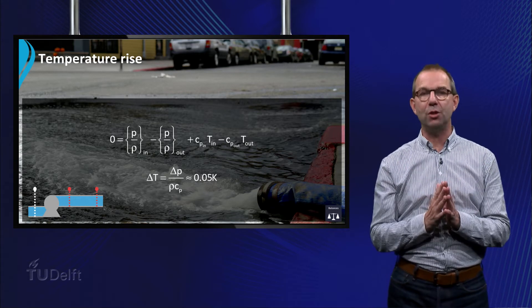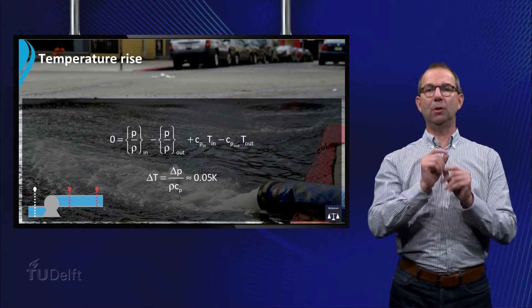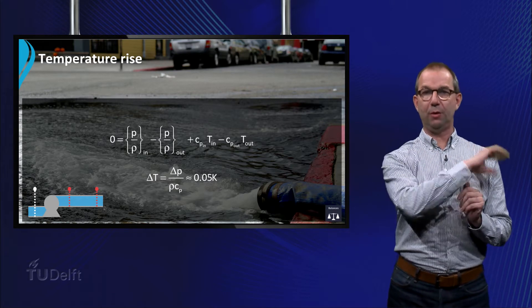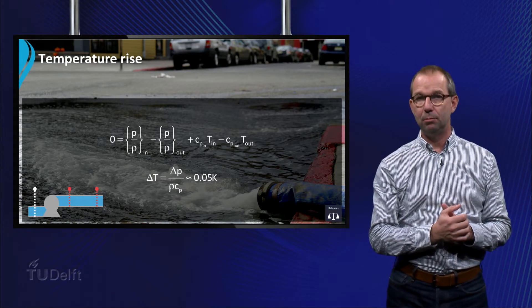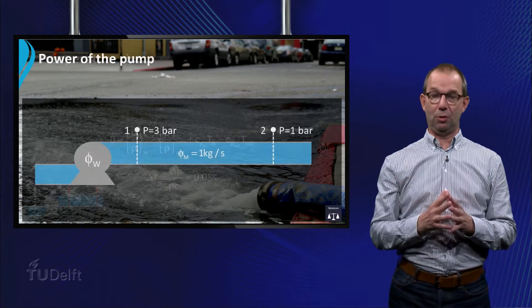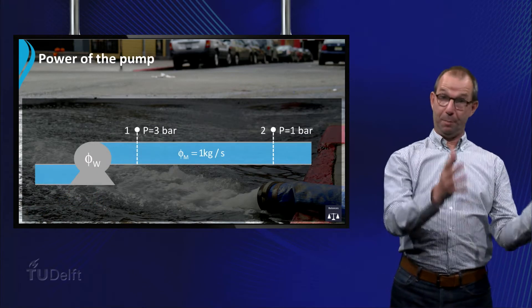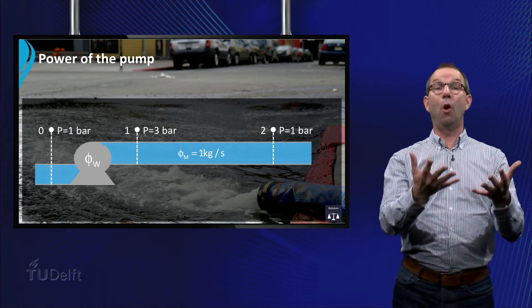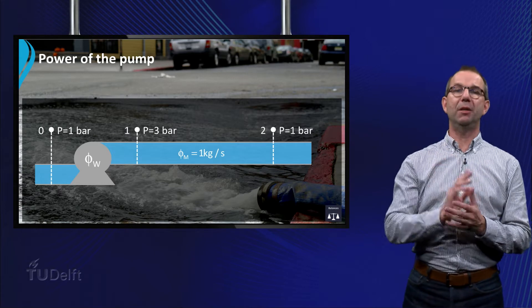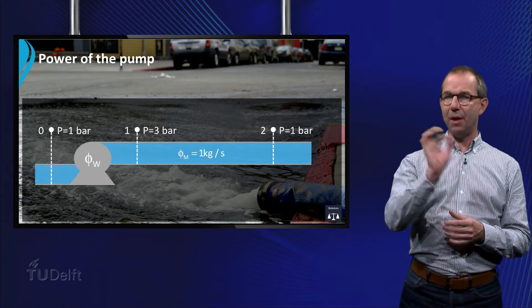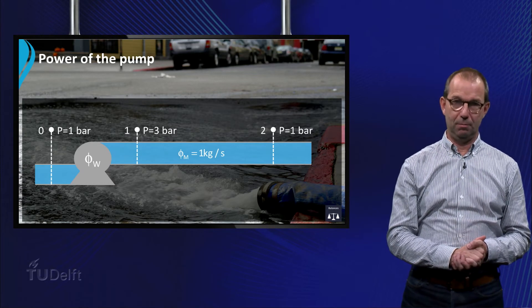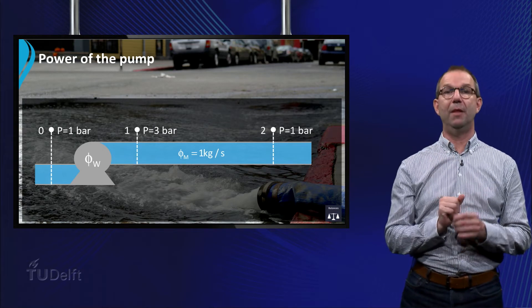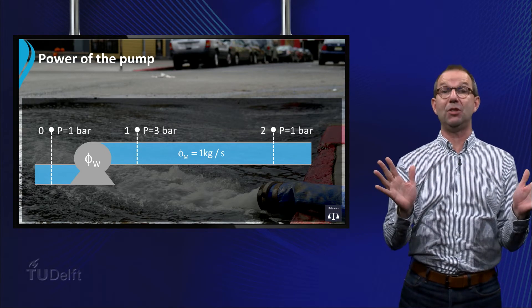Our second question was, what is the power of the pump that forces the water through the tube? For that, we consider a balance over the pump. This means between points 0 and 1 in our drawing. We assume an ideal pump that does nothing but increasing the pressure. So there is no friction and thus we can neglect thermal effects in the energy balance. This gives us the following equation.